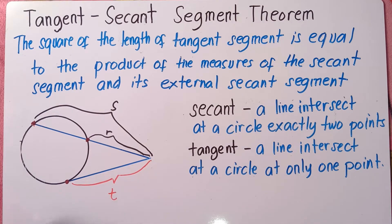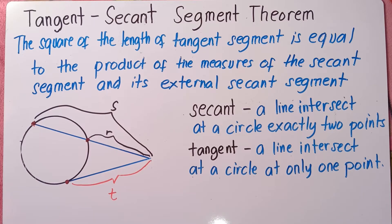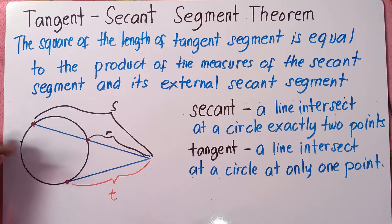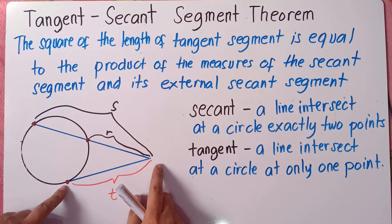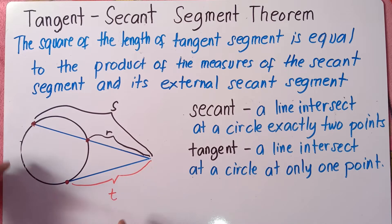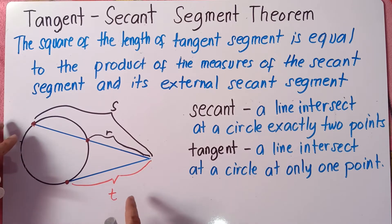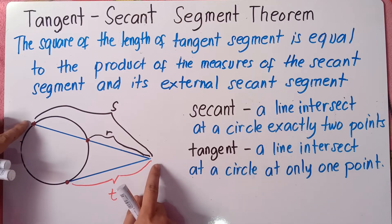Now before we analyze the theorem, we need to know first what do you mean by secant and what do you mean by tangent. As a secant, a line intersects a circle at exactly two points. While the tangent, a line intersects a circle at exactly one point. So the secant here is a line that intersects a circle at two points.